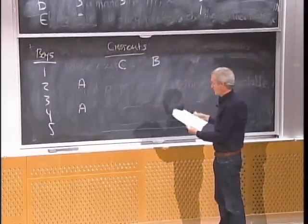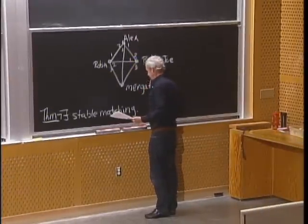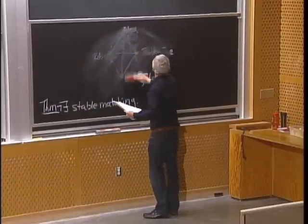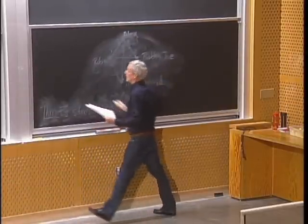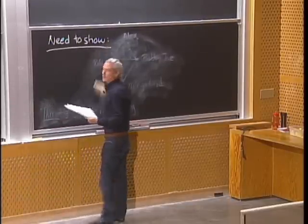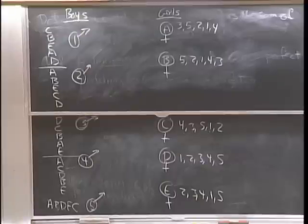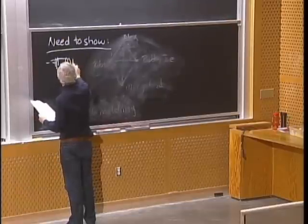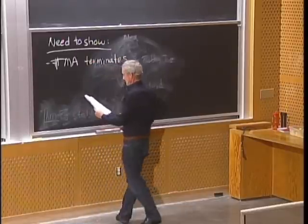Now we need to prove TMA always produces a stable matching. The things we need to show are: (1) TMA terminates, (2) everyone gets married, (3) there are no rogue couples, and (4) it runs quickly. There's also the question of fairness — is TMA better for boys or girls?